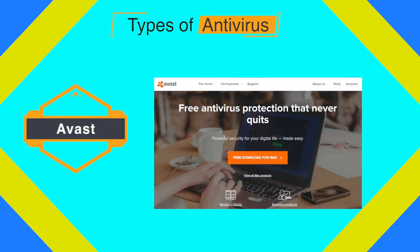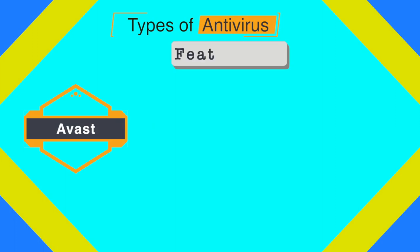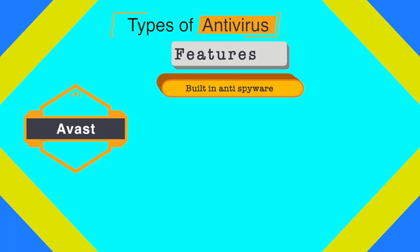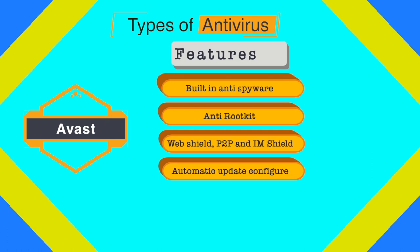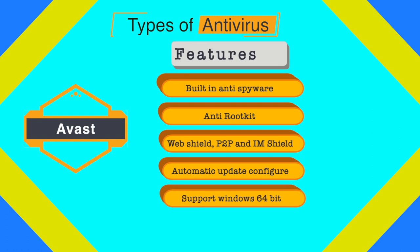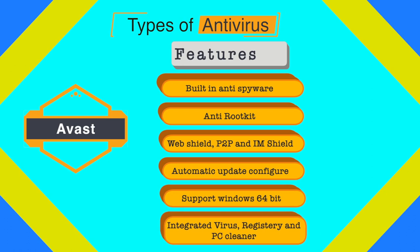Avast is one of the best free antivirus software available, providing complete protection against security threats. It includes built-in anti-spyware, anti-rootkit, a web shield, and a P2P and instant messaging shield — important since peer-to-peer networks like torrent sites are commonly used to spread malware. It also features automatic updates, Windows 64-bit support, an integrated virus cleaner, registry cleaner, and PC tuner.